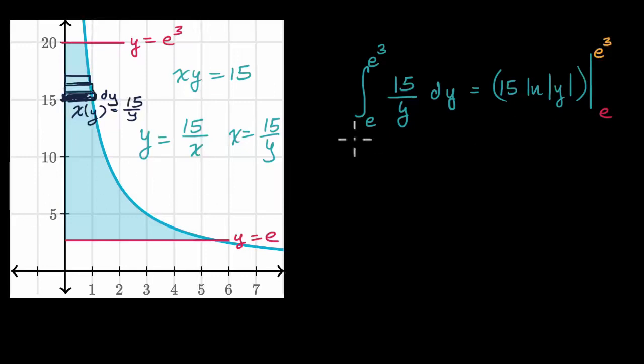So we're going to evaluate it at e to the third and at e. So let's first evaluate it at e to the third. So that's 15 times the natural log of the absolute value of e to the third power minus 15 times the natural log of the absolute value of e.